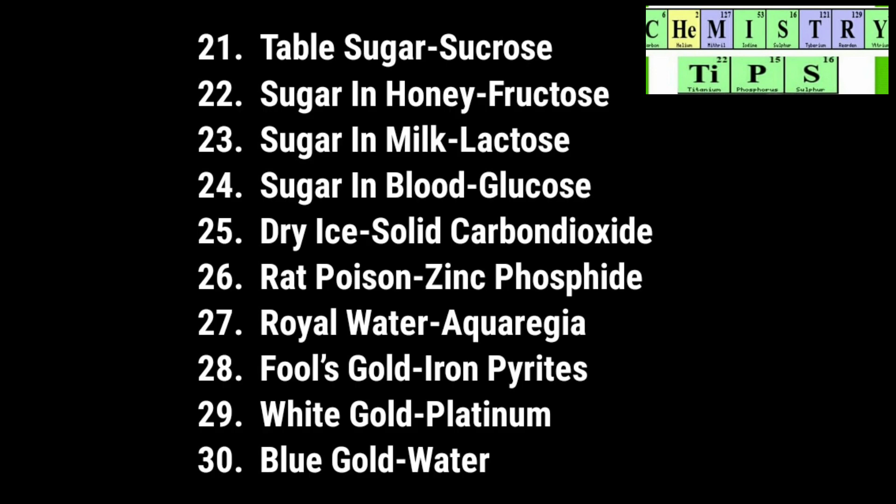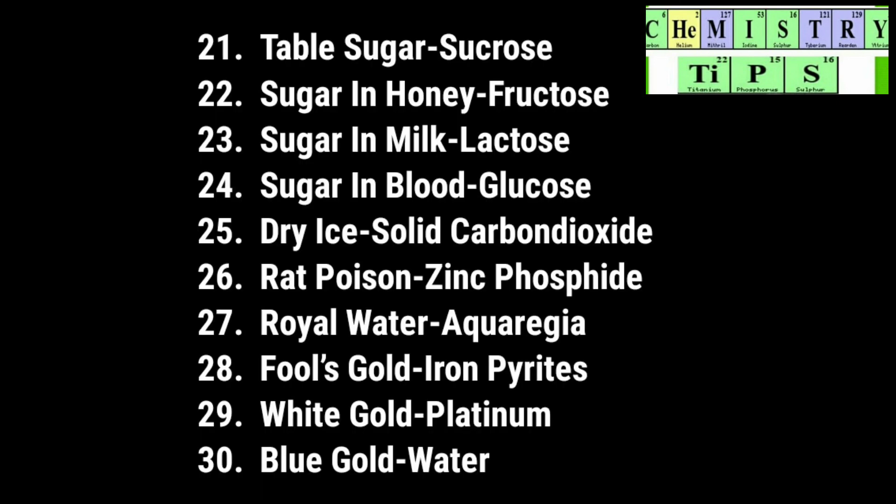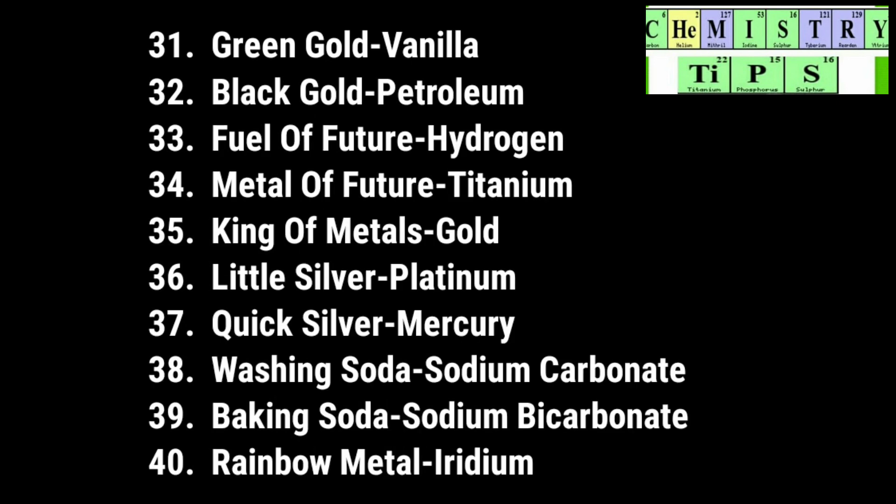Next, false gold — correct answer: iron pyrites. White gold — it is platinum. Blue gold — we know that it is water. Next, green gold — that is vanilla. Black gold means petroleum.